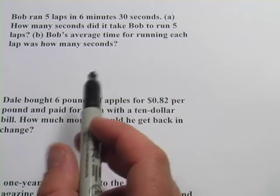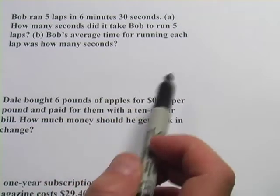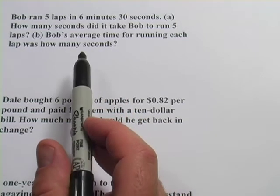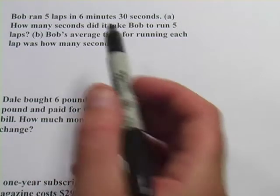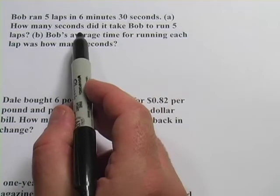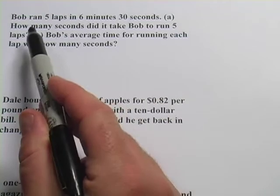Here we have some word problems that have two steps in them. Let's take a look. This first one says Bob ran five laps in six minutes and 30 seconds. Part A says how many seconds did it take Bob to run five laps?